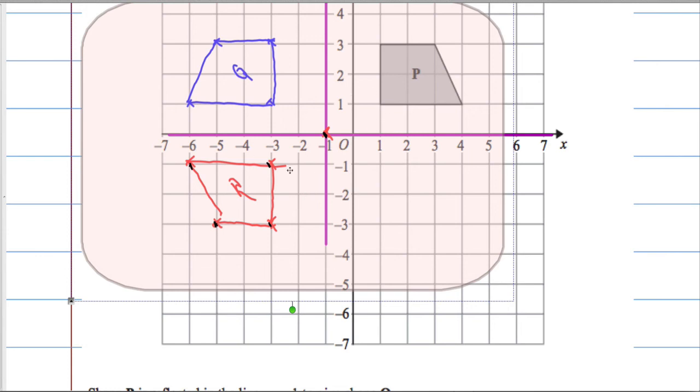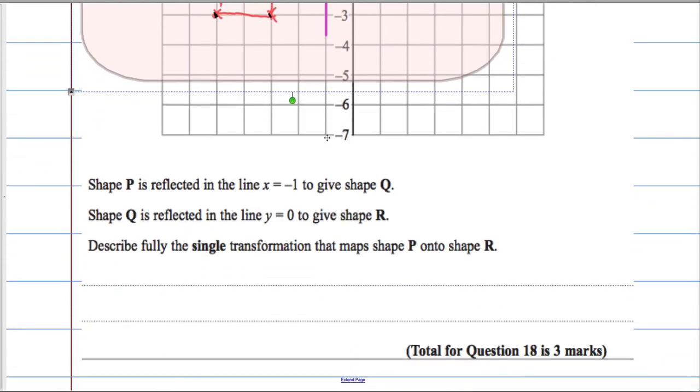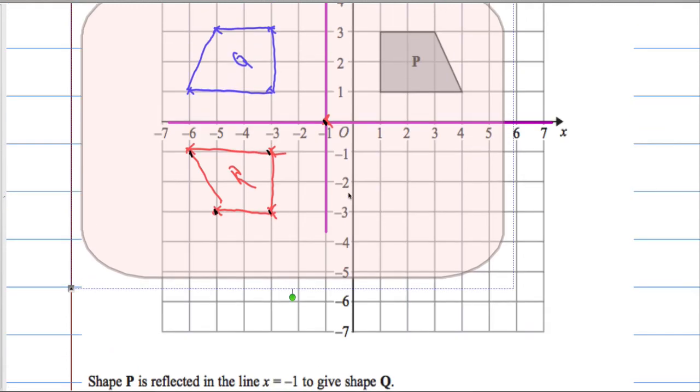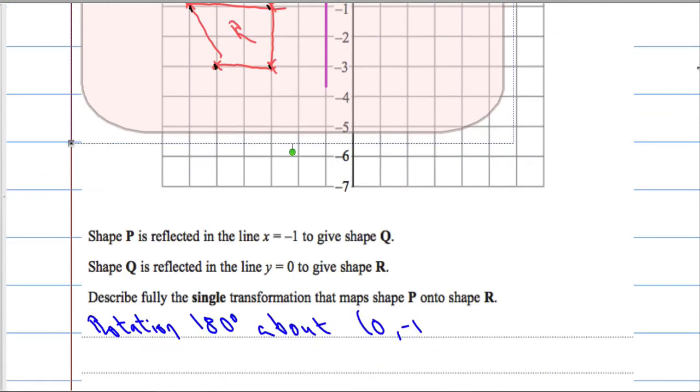It's a rotation of 180 degrees about the point (0, -1). So, rotation 180 degrees about... beg your pardon, (-1, 0). What am I like? (-1, 0). So rotation of 180 degrees about (-1, 0). Okay.